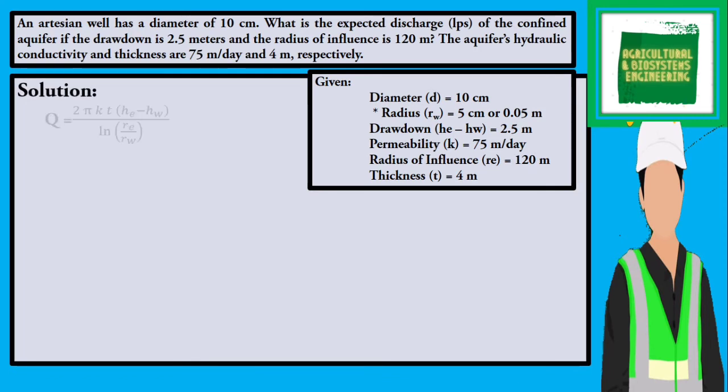Now, we proceed with our solution. Substituting the values, we have Q is equal to 2 times pi, times the permeability of 75 meters per day, times the thickness of 4 meters, times the drawdown of 2.5 meters, all over ln of radius of influence of 120 meters all over the radius of well to be 0.05 meters.